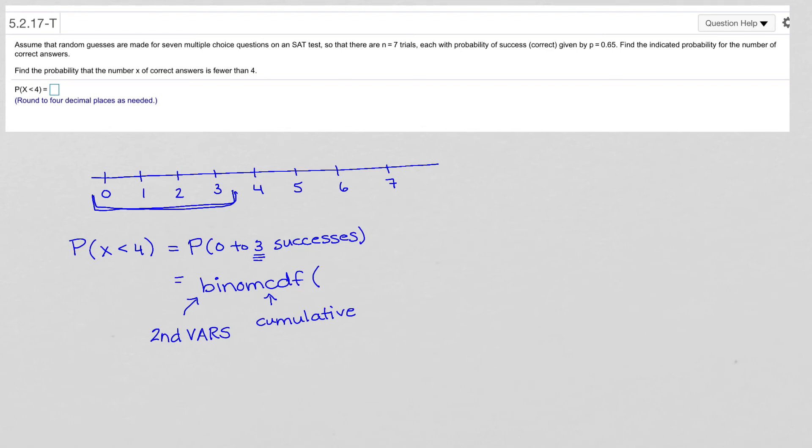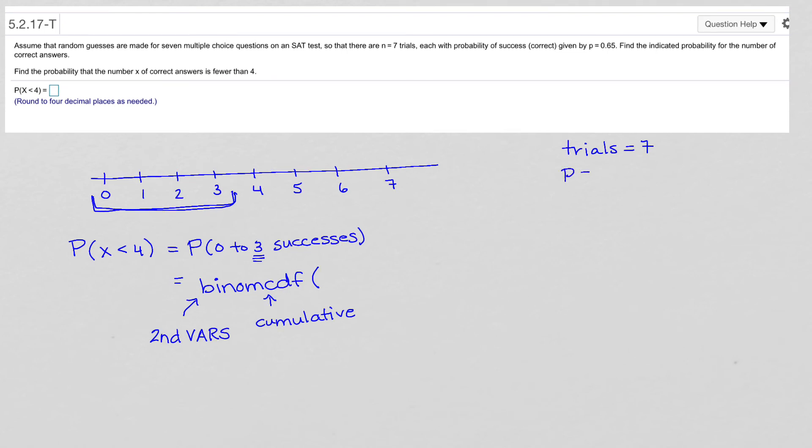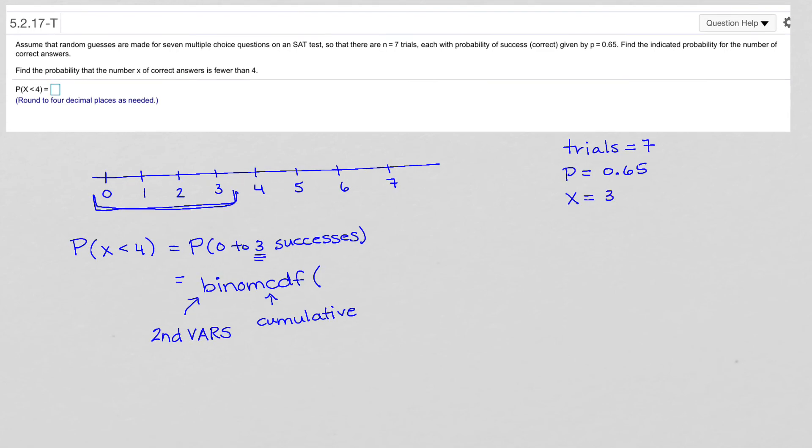And then if you have the wizard, it will say trials, and you'll say that's equal to seven. Then it will say, what is P, and that's 0.65. And then X is your maximum number of successes, and you'll say that that's three.